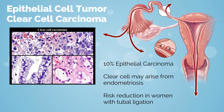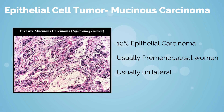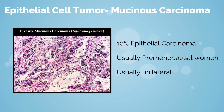Clear cell carcinoma comprises about 10% of epithelial carcinomas. It is usually identified early; however, late-stage tumors are not sensitive to chemotherapy. There is a reduction of clear cell tumors in women who have undergone tubal ligation, possibly due to limited retrograde menstruation. It is thought that clear cell carcinoma arises from endometriosis. Mucinous carcinoma also comprises 10% of epithelial carcinomas. It nearly always presents at stage 1, usually in premenopausal women, and can be very large — as much as 20 cm in diameter — and usually unilateral.